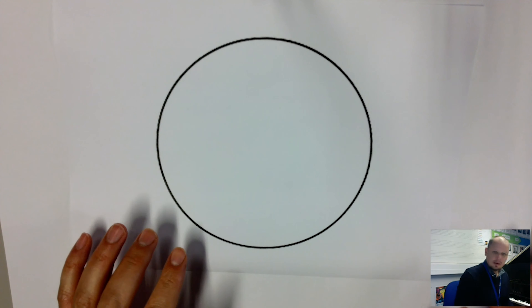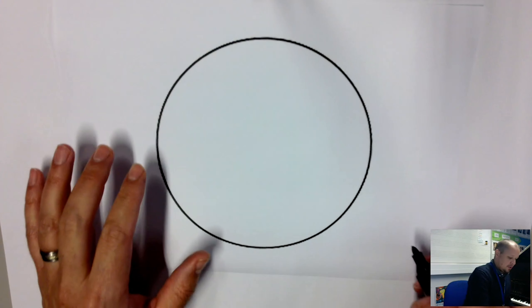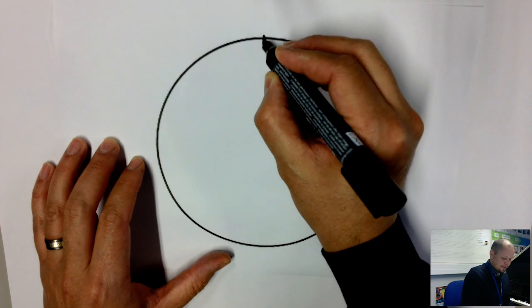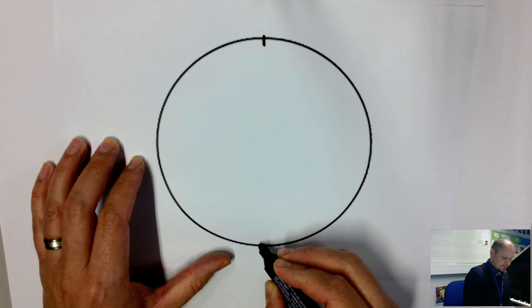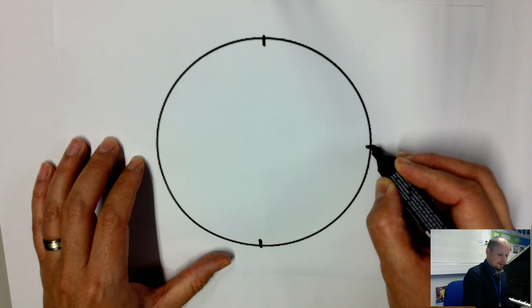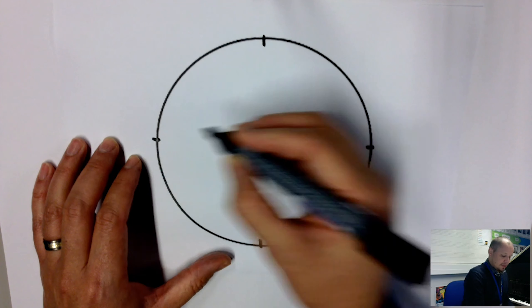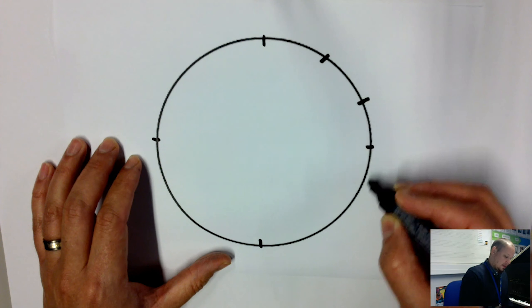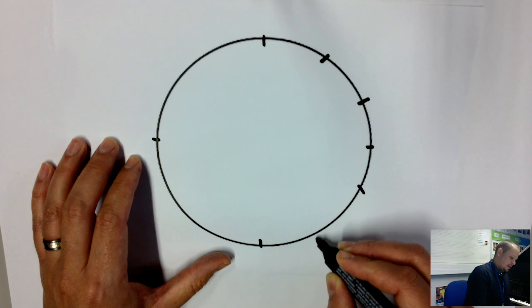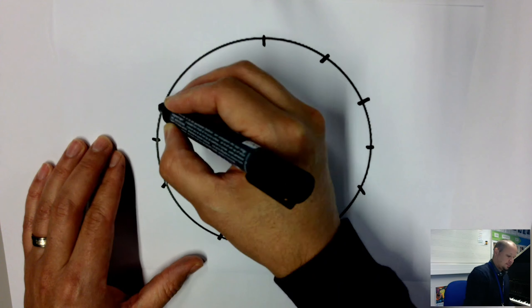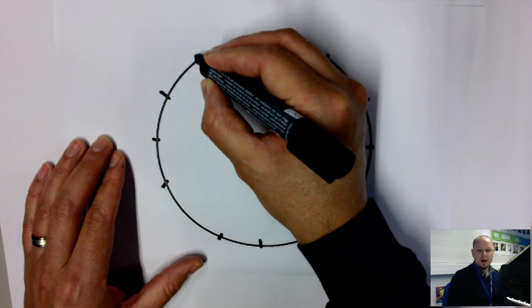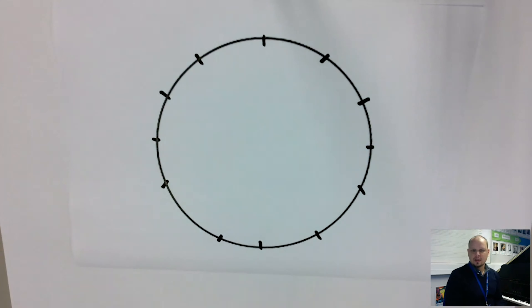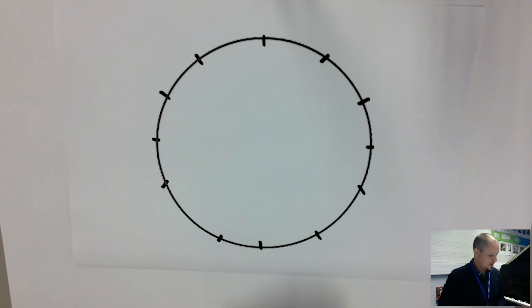Let's divide up our circle like a clock. We'll have 12 o'clock up here, six o'clock down there, three o'clock and nine o'clock, and then the in-between positions: one, two, four, five, seven, eight, ten, eleven o'clock. So there are 12 points on your circle, exactly like a clock — essentially 12 semitones in an octave.